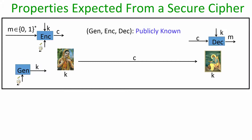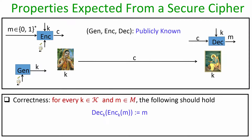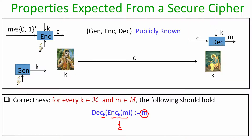A secure symmetric encryption scheme requires two properties. The first is the correctness property: for any key output by the key generation algorithm and any plaintext m encrypted as ciphertext c, decrypting c under the same key k must recover the original m. As an analogy, if you have a physical lock and two copies of the same key — locking the lock with one copy and sending it to you, then you should be able to open it with your copy of the key.